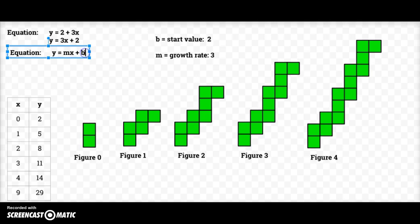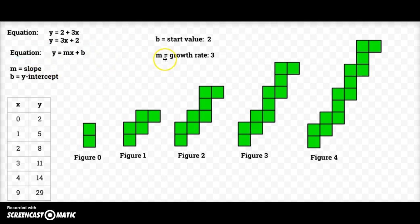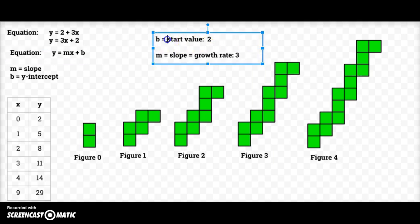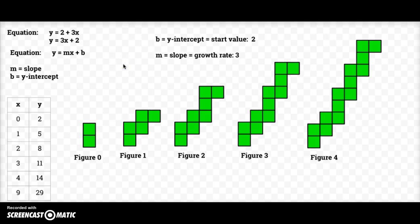Sometimes we also call m the slope, and we call b the y-intercept. So m is also my growth rate and my slope, and b is my start value but it is also my y-intercept. So I have multiple representations for my visual pattern — slope, y-intercept — all from looking at three figures, creating a table, and then writing the equation.